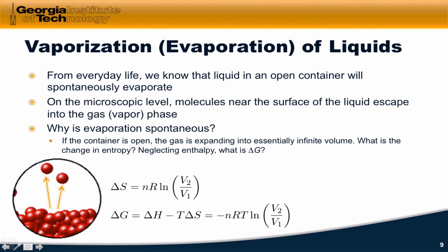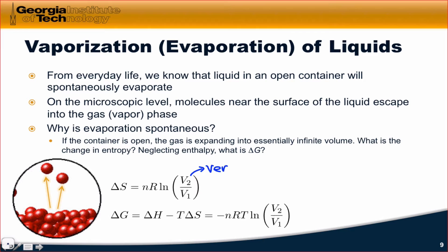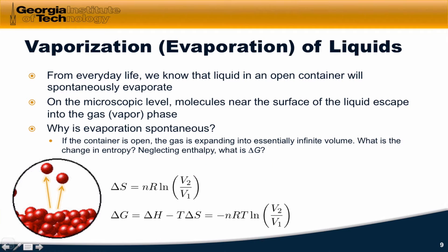Here are a couple of equations to remind us of this idea. We saw that for an ideal gas expanding from V1 to V2, the entropy change is proportional to the natural log of V2 over V1. So if V2 is very large, as it is when a liquid is sitting in an open container such that the gas molecules can fill, say, the entire volume of a room, then delta S is going to be very large and very positive, and delta G is going to end up being very negative — that is, the process will be spontaneous.